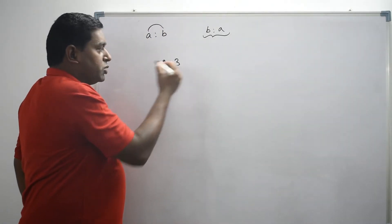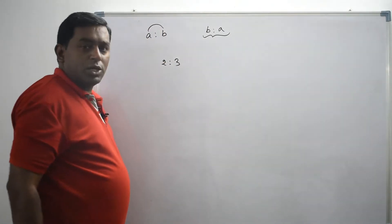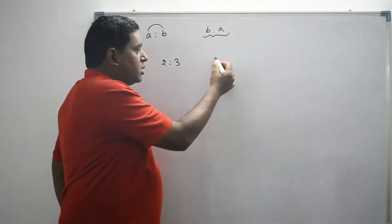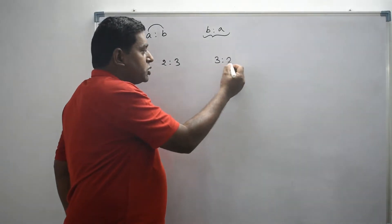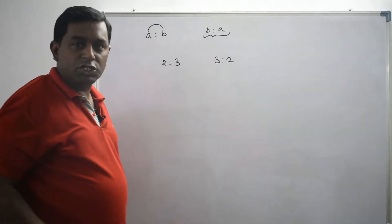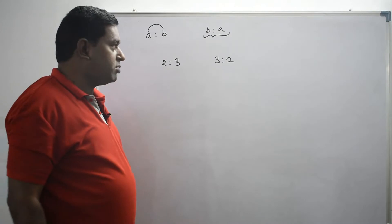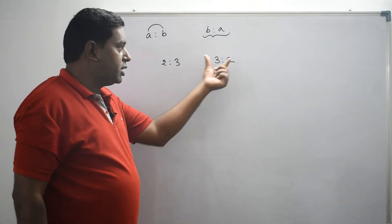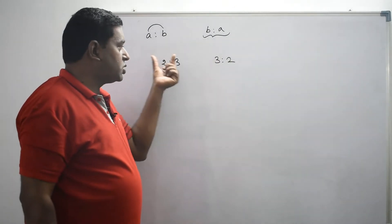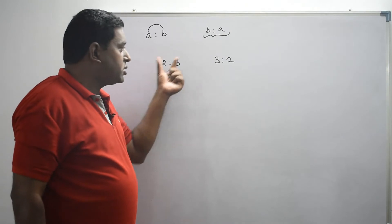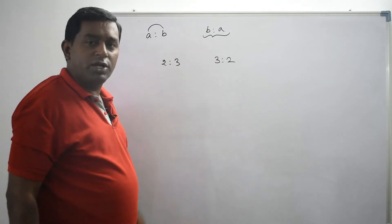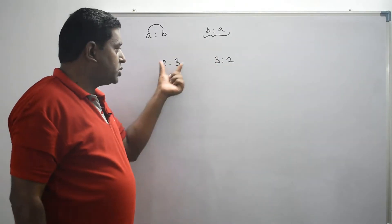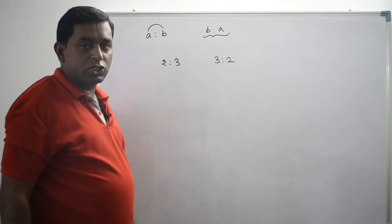Let me consider the ratio 2 is to 3. What is the inverse ratio of 2 is to 3? I have to switch the first term and second term, so I get 3 is to 2. So 3 is to 2 is the inverse ratio of 2 is to 3, and 2 is to 3 is the inverse ratio of 3 is to 2. These two ratios are inverse to each other.